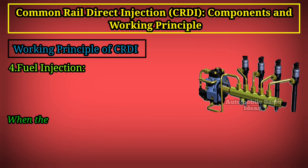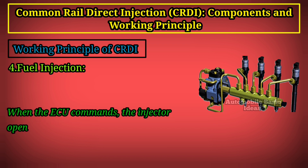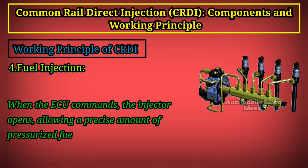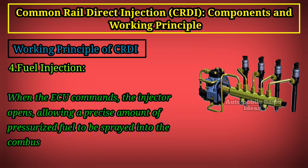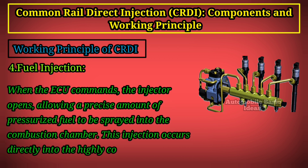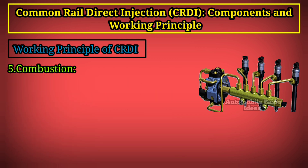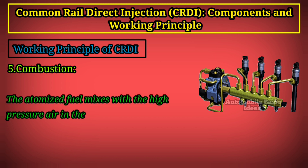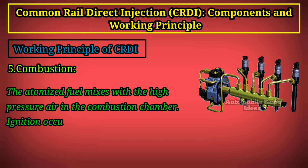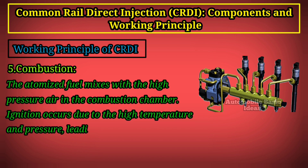Step 4 — Fuel Injection: when the ECU commands, the injector opens, allowing a precise amount of pressurized fuel to be sprayed into the combustion chamber. This injection occurs directly into the highly compressed air in the combustion chamber. Step 5 — Combustion: the atomized fuel mixes with the high-pressure air in the combustion chamber, and ignition occurs due to the high temperature and pressure, leading to efficient combustion.